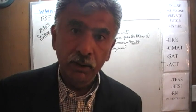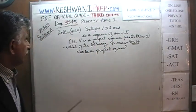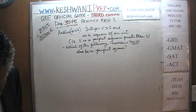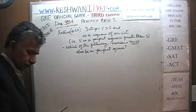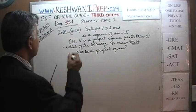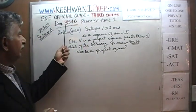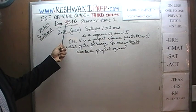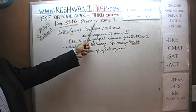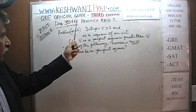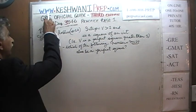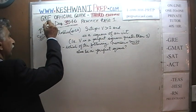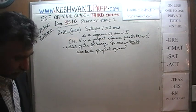Today is lesson number 146 — day 3146. The '3' in the thousands place indicates we are in the third edition; day 146. We are working on the practice test found at the very end of the book, on page number 366, section number 6. The problem is already on the blackboard — let's take a look at it.